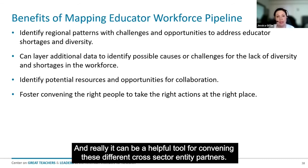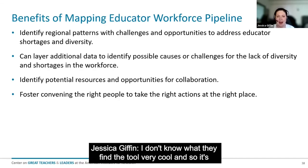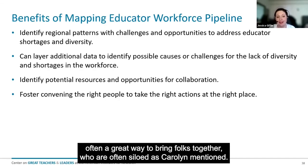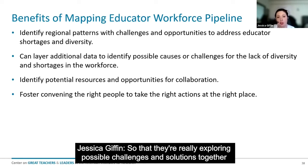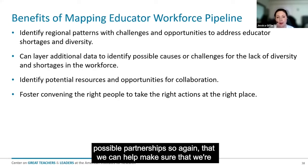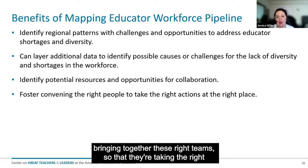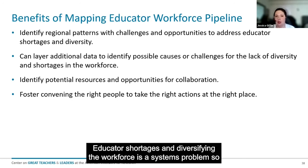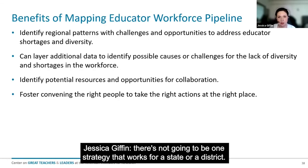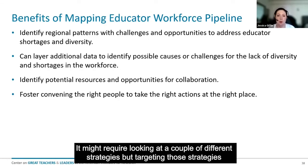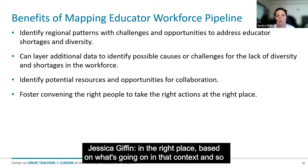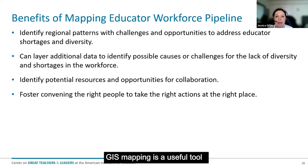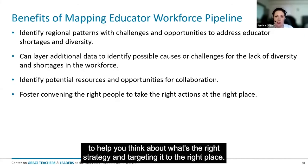GIS can also be a helpful tool for convening different cross-sector entity partners. People find the tool very compelling, so it's often a great way to bring together folks who are often siloed — as Carolyn mentioned — so that they're really exploring possible challenges and solutions together and possible partnerships. We can help make sure we're bringing together the right teams so that they're taking the right action with the right evidence-based strategy and targeting it to the right place. Educator shortages and diversifying the workforce is a systems problem, so it may require looking at a couple of different strategies and targeting those strategies to the right place based on what's going on in that context.